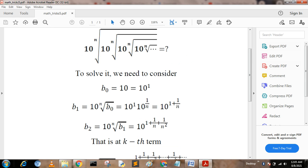We substitute the value of b₀ as 10¹. This gives us 10¹ times 10^(1/n), which equals 10^(1+1/n). Now for b₂: